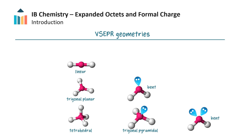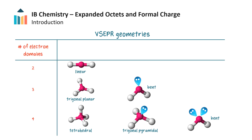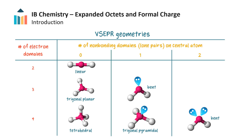We have also learnt that the VSEPR molecular geometry of a covalent molecule depends on the number of electron domains around a central atom and their type, whether bonding or non-bonding. We've also learnt how the molecule shape influences bond angles.